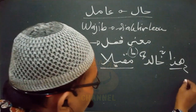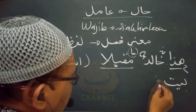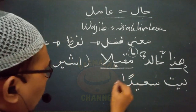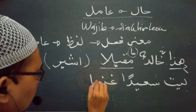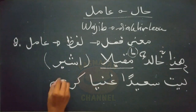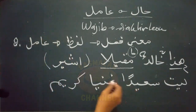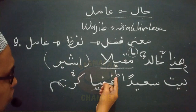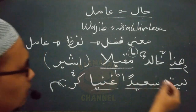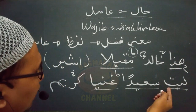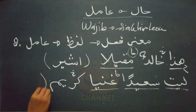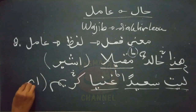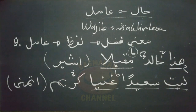Contoh lain seperti lafad 'laita Sa'idan ghaniyyan karimun': semoga Sa'id yang dalam keadaan kaya menjadi orang yang mulia. Lafad 'ghaniyyan' adalah hal daripada sohibul hal yang berupa lafad 'Sa'id', sementara amilnya adalah lafad 'laita' yang merupakan lafad yang mengandung makna fi'il, yaitu 'adamanna' — aku berharap, namun harapan ini adalah sebuah angan-angan.